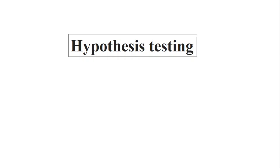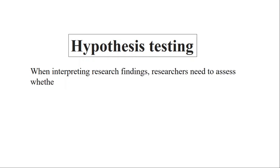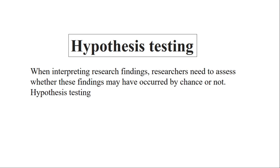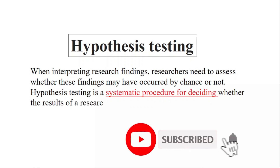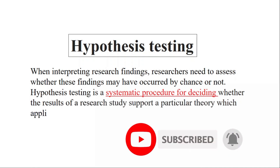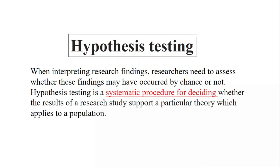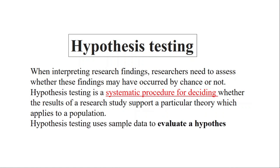When interpreting research findings, researchers need to assess whether these findings may have occurred by chance or not. Hypothesis testing is a systematic procedure for deciding whether the results of a research study support a particular theory which applies to a population. It uses sample data to evaluate a hypothesis about a population and verifies whether particular research findings have occurred by chance or not.